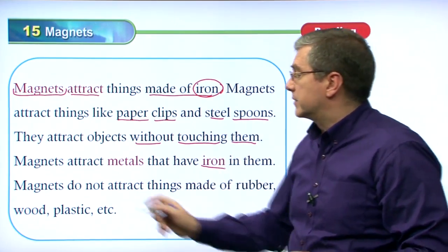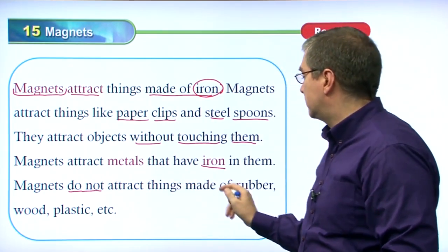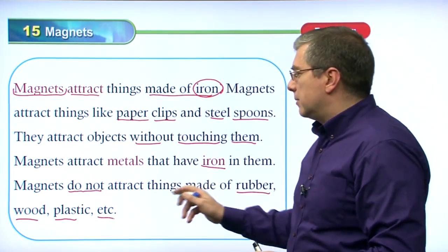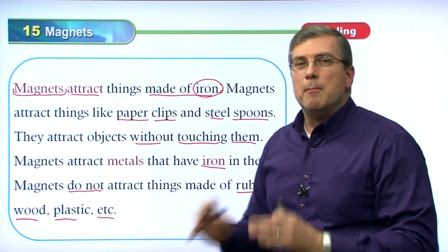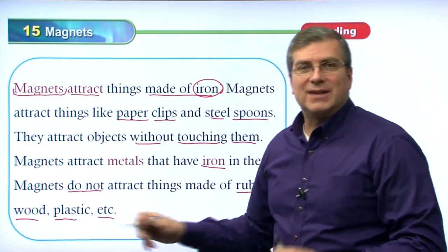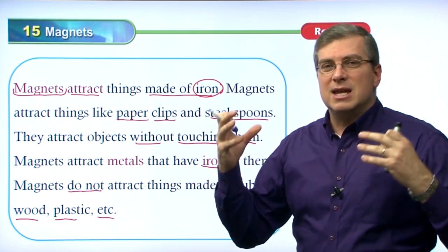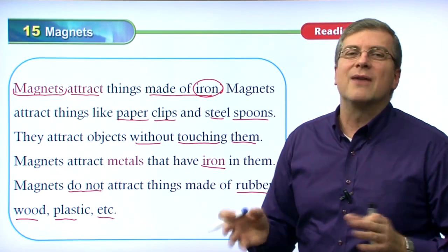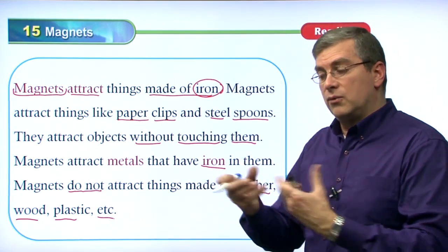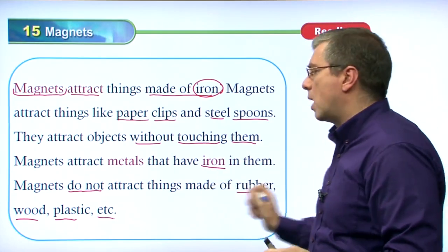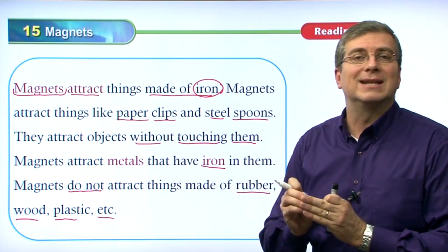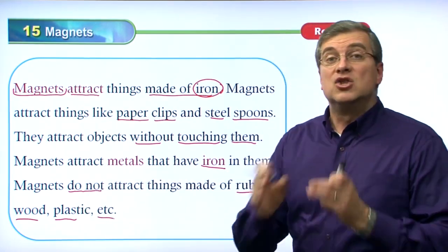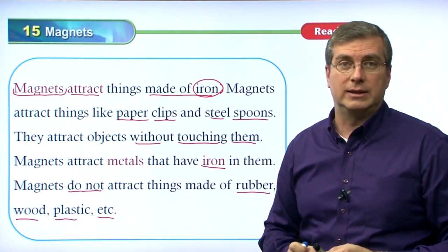Magnets don't attract other things — things made of rubber, wood, plastic, etc. Actually, magnets do exert some force on everything, but the atoms inside rubber, wood, and plastic don't change their direction very easily. There needs to be a really, really strong magnet to attract these things, but we don't have those types of magnets. So when we experiment, we see that magnets don't attract rubber, wood, or plastic — there's no force we can detect. Just the iron atoms change direction so easily that they are attracted to magnets.